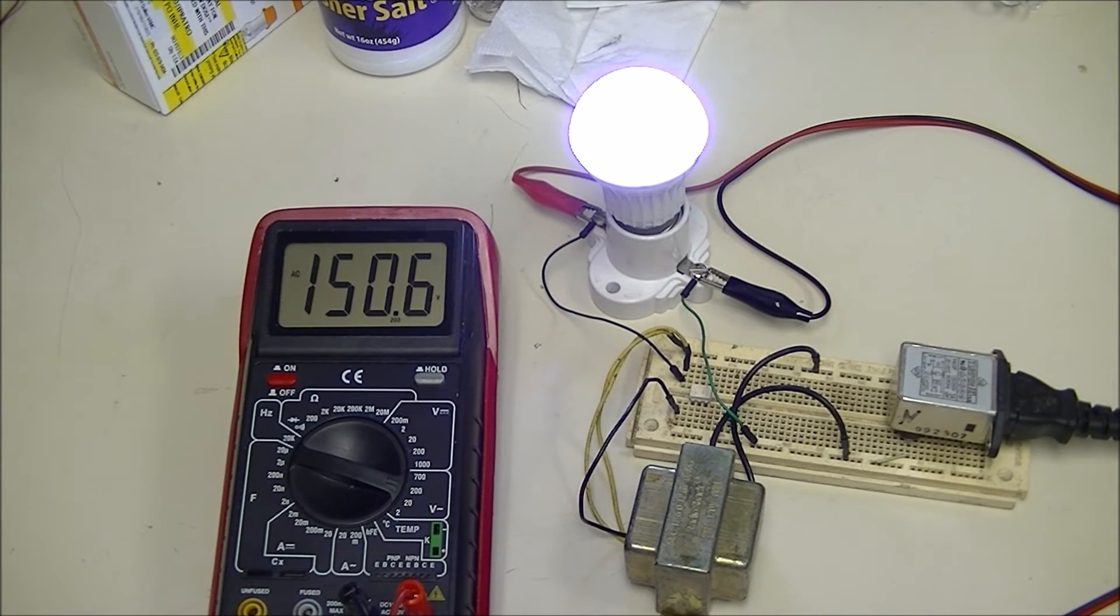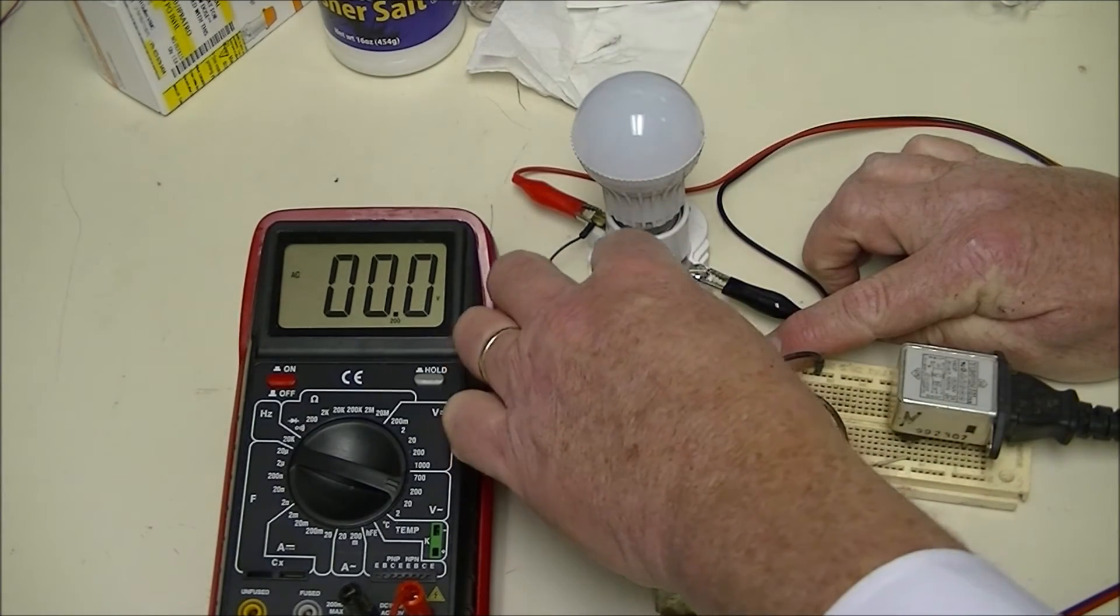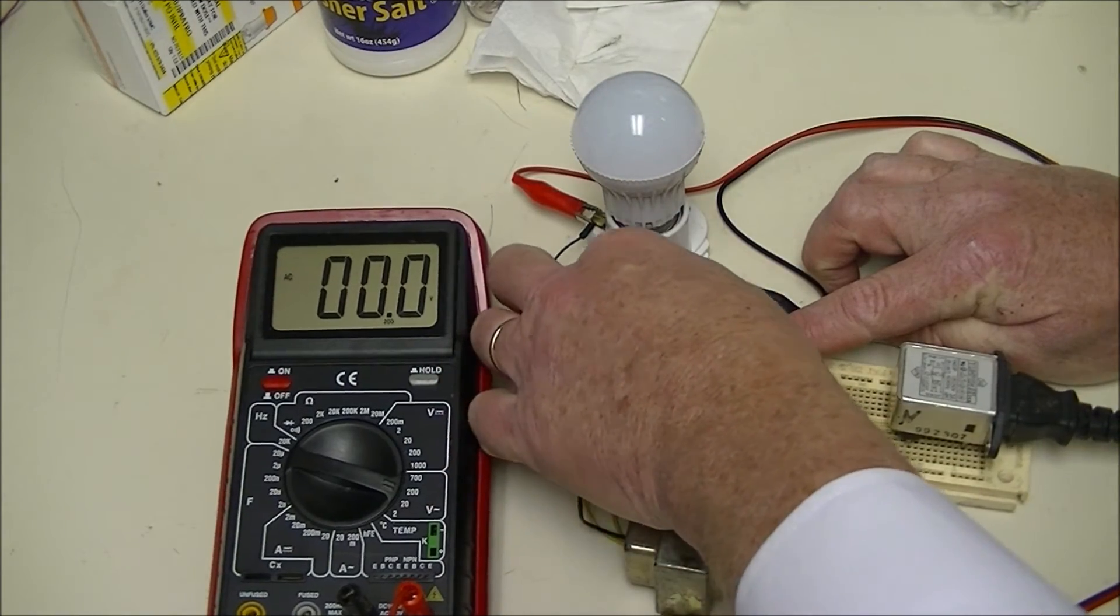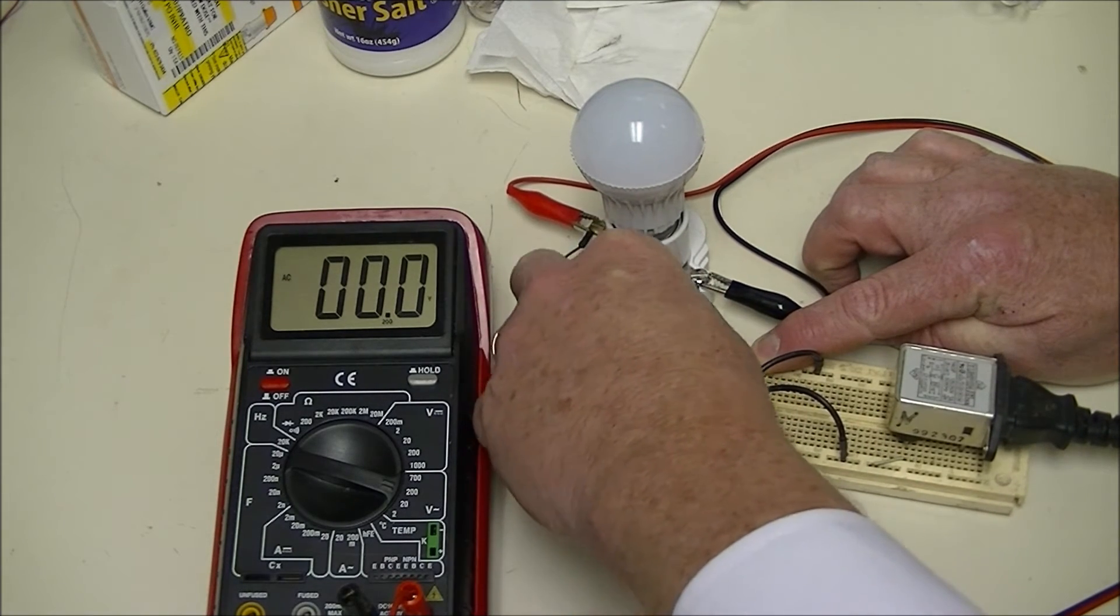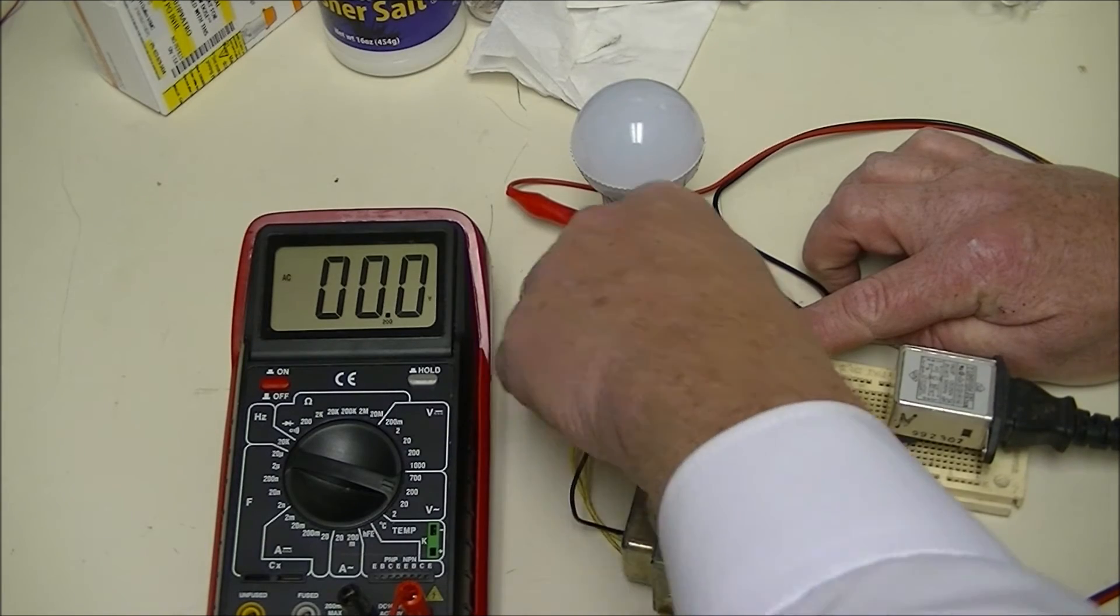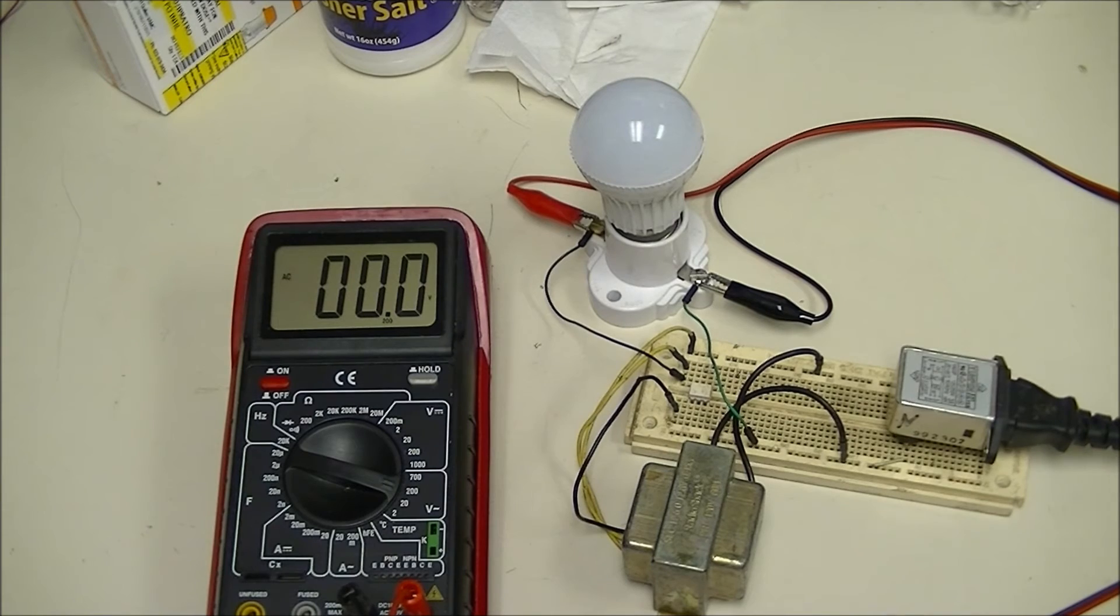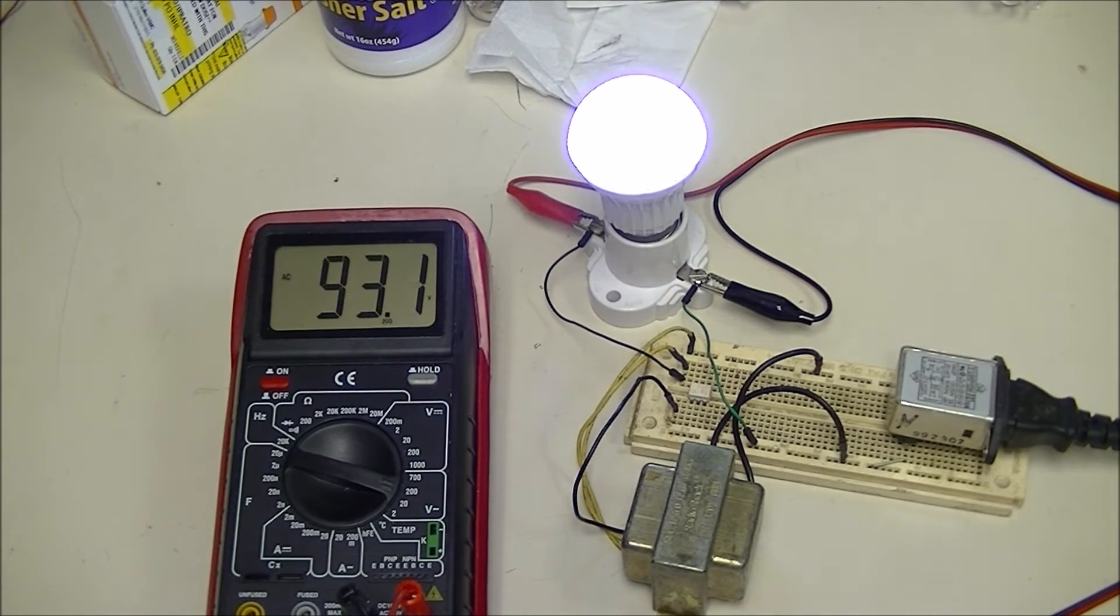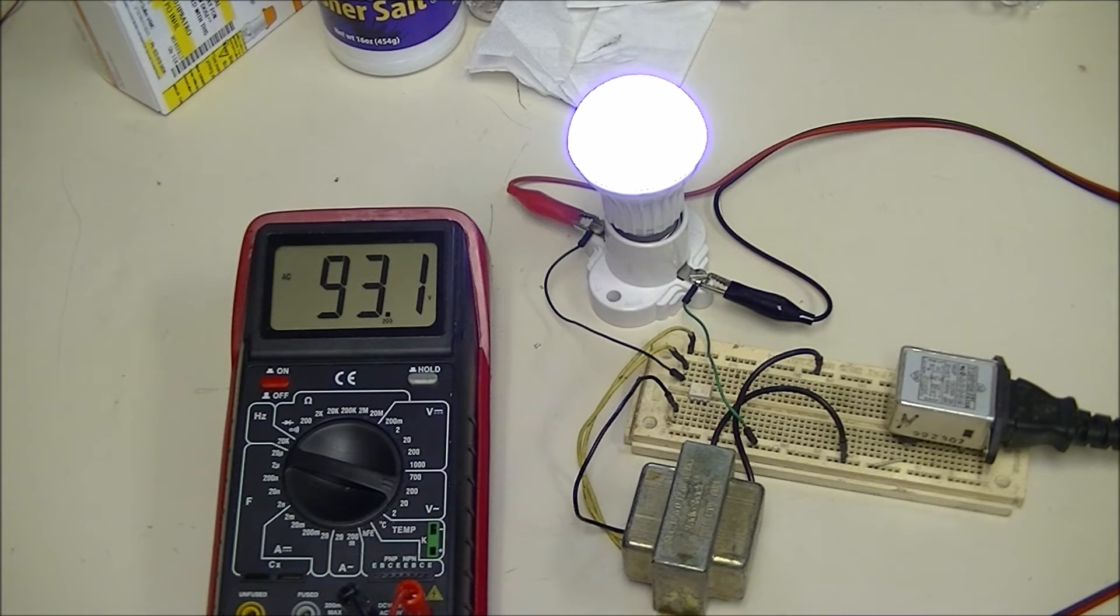Watch the two yellow wires. I'm going to reverse them. Now I've dropped it to about 90 volts. If you need an oddball transformer like 150 volts, you can use this to make one.